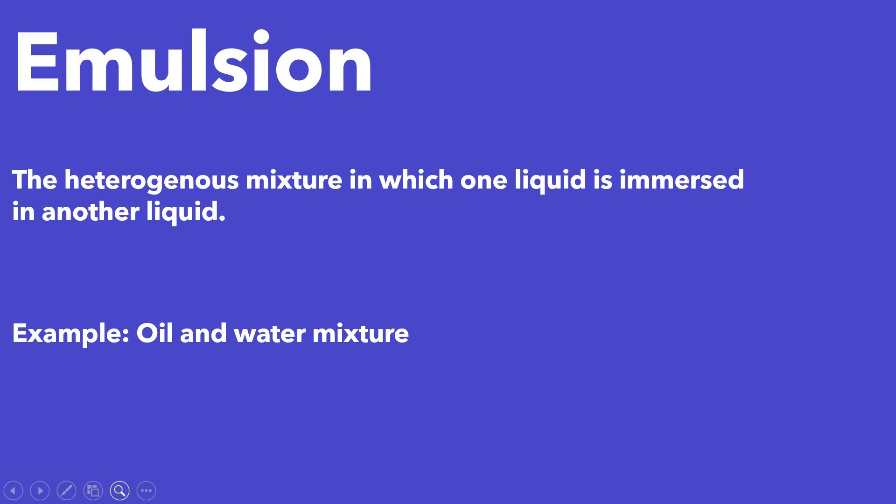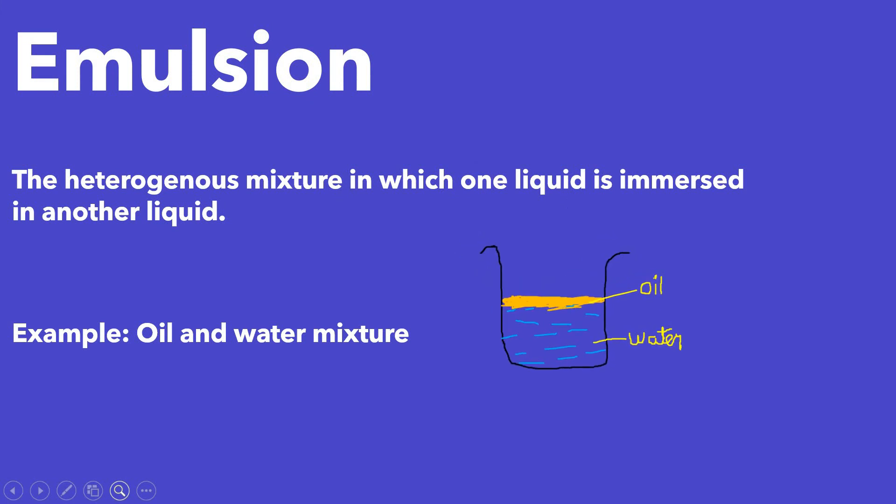The heterogeneous mixture in which one liquid is immersed in another liquid — for example, oil and water mixture. This image gives you an idea of emulsion: there is a layer of oil and there is a layer of water, so there are two separate phases. It is showing a heterogeneous mixture, and since oil is immersed in another liquid, it is an emulsion heterogeneous mixture.